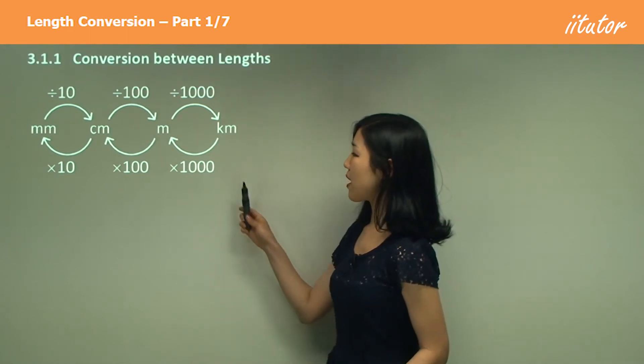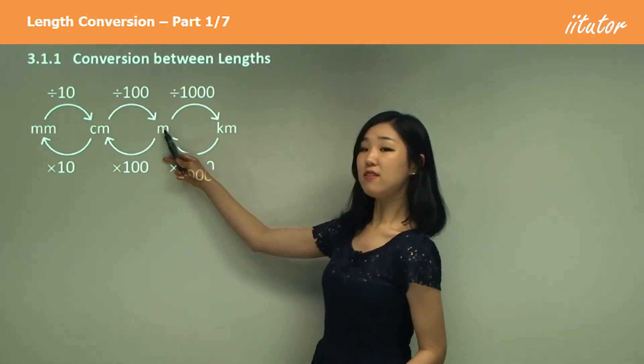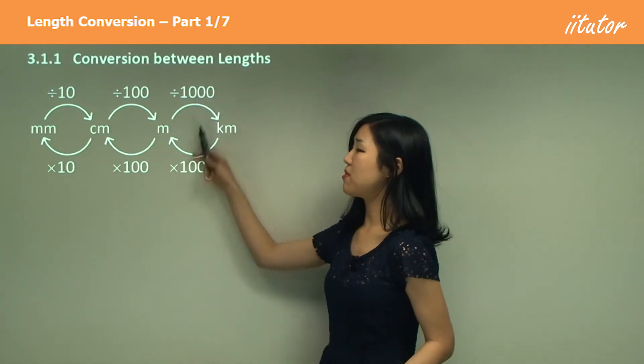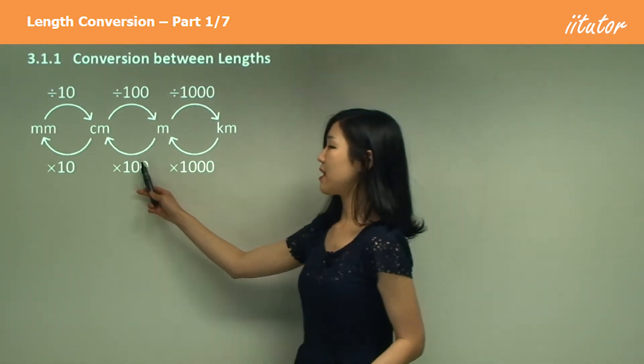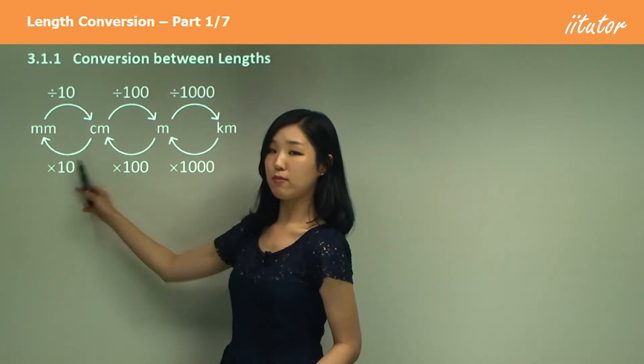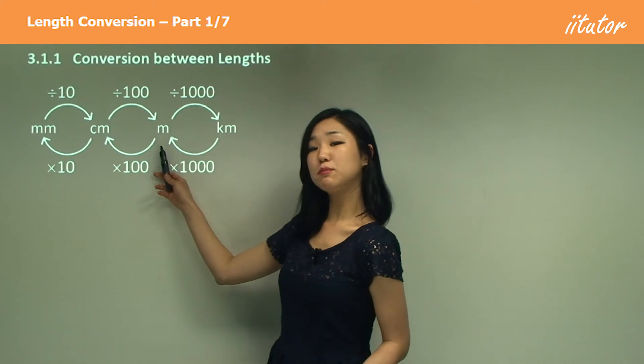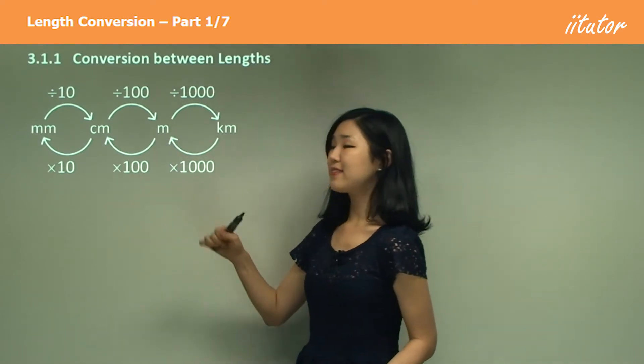Now let's go the other way around. From kilometres to metres, we know that again, there's 1000 metres in a kilometre. It's the same thousand, but this time we multiply. And same here, we multiply, multiply. But this is 100 and this is 10. So you can see that from a larger unit to a smaller unit, we always multiply.